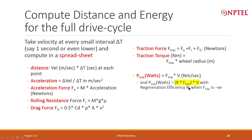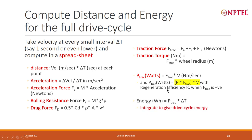R equals 1 if there is acceleration. If there is deceleration, F_traction will be negative and R will equal 0.3 or whatever value you assign. The traction power will be negative, so you take the minus of that. Then compute the energy requirement: integrate the power, or take the power at the beginning and end, divide by 2, and multiply by 1 second — that gives you the energy.